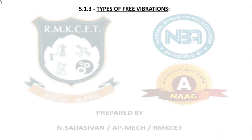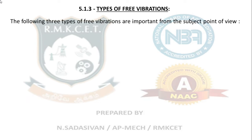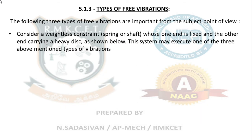Now, types of free vibration. The third unit is about free vibration only. What are the subdivisions? The following three types of free vibrations are important from your syllabus point of view. One important assumption we make in all mathematical calculations is that the beam, shaft, or spring being considered has no mass — the inertial effects of the spring or shaft are neglected, and only the force or weight causing the disturbance is considered for calculation.